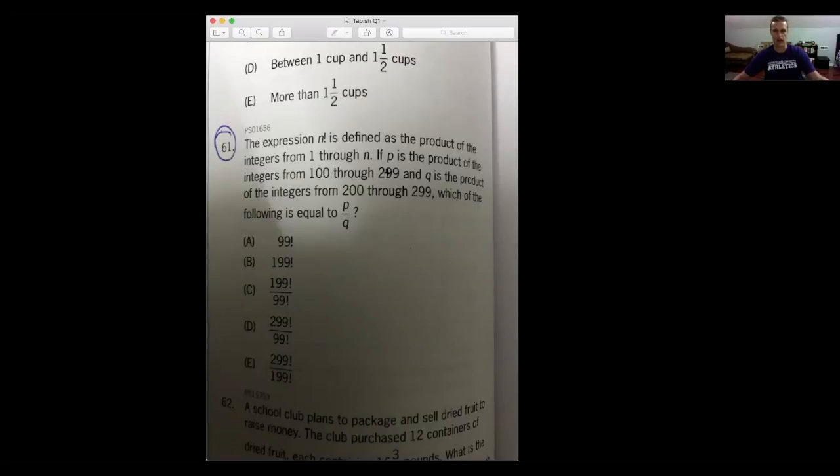And then q is the product of the integers from 200 to 299, which of the following is equal to p over q, and then you have a bunch of answer choices, so let me go ahead and stop sharing that, and I will try to recreate it on the whiteboard.